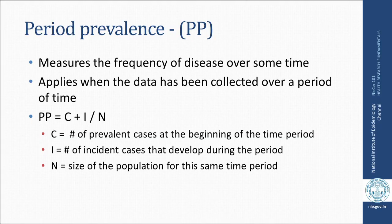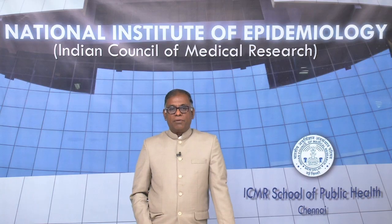Period prevalence measures the frequency of disease over a period of time. This applies when data has been collected over a period of time. It is denoted as PP = (C + I) / N, where C is the number of prevalent cases at the beginning of the time period, I is the incident cases — that is, new cases that develop during the period of your survey — and N is the size of the population for the same time period.